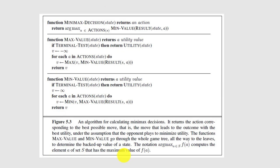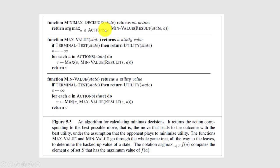This will be the algorithm where we write a function. The function name is minimax_decision and the state is the input — it represents the state of the player — and it is going to return the action. It returns the argmax over actions of state of the min value of the result of state and action.